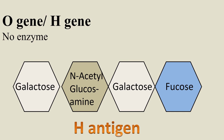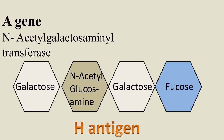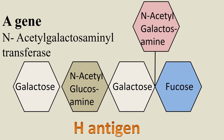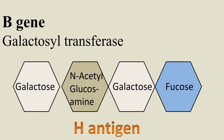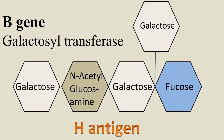When the A gene is present in an individual, the enzyme N-acetylgalactosylaminyltransferase is expressed. This enzyme catalyzes the addition of N-acetylglucosamine on the existing H antigen carbohydrate structure. When an individual possesses the B gene, the enzyme galactosylaminyltransferase is expressed. This enzyme catalyzes the addition of galactose on the H antigen carbohydrate structure, leading to the formation of B antigen.